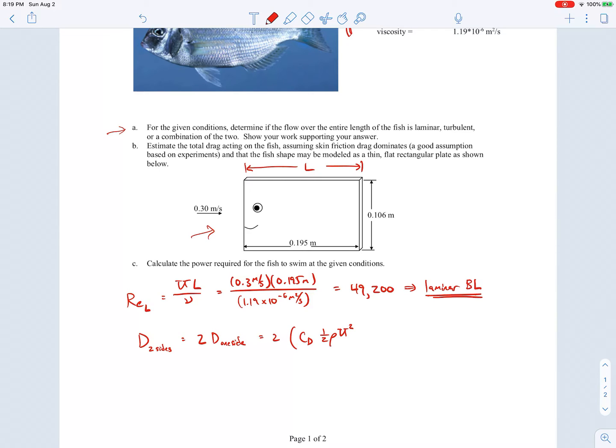The area, we'll call this distance W, and we said the length of the fish was L. Remember we're modeling this as a rectangular plate, so the area would be L times W. This is the drag acting on one side of the fish, and we know everything in that expression except for the C sub D, the drag coefficient.